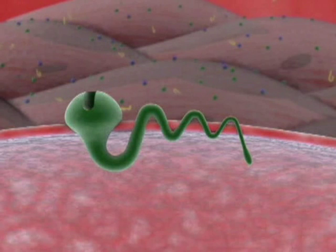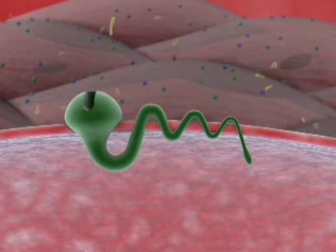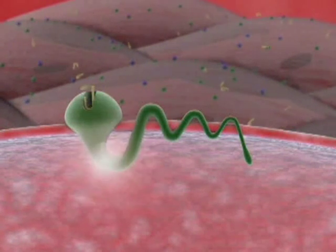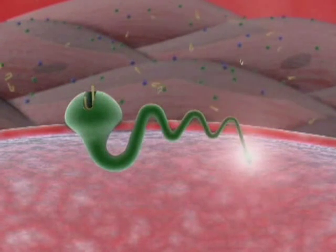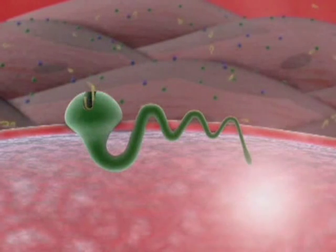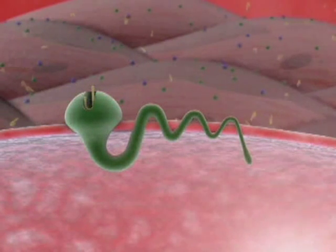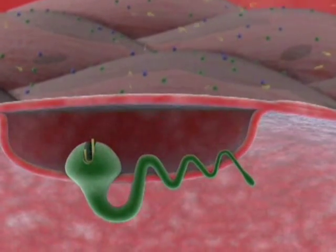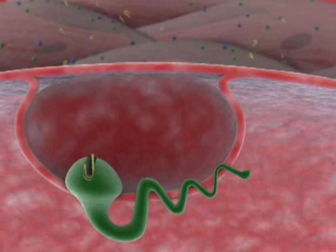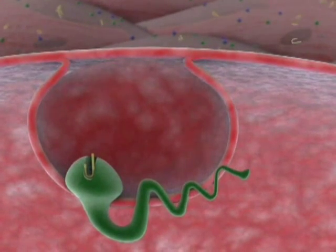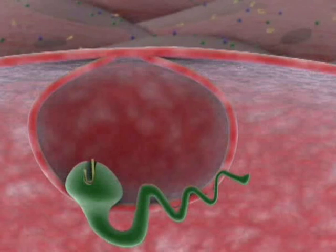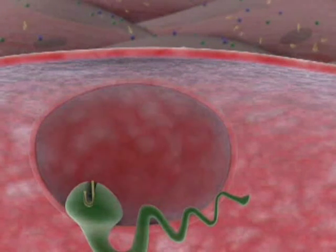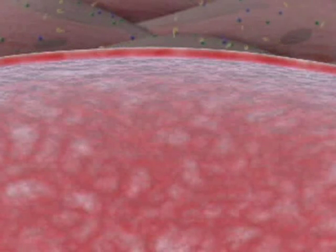When an endothelin 1 molecule binds with an ETB receptor, the result is different. The receptor will again release a signal, but this time it causes blood vessels to dilate rather than constrict. However, this is not the only difference. When endothelin binds to an ETB receptor, the two molecules are taken into the cell itself, and once the endothelin has been internalized it is no longer present in the circulation. This process actively reduces the concentration of endothelins in the blood.